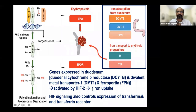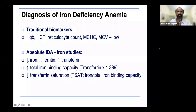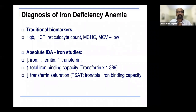Coming now to diagnosis and usage of biomarkers: traditional biomarkers for iron deficiency have included hemoglobin itself — in developing nations like India, many people's normal hemoglobin is not truly normal by international standards and are labeled anemic. Other tools include hematocrit, reticulocyte count, MCHC, and MCV — low MCV being one of the more common tools used in clinical practice.